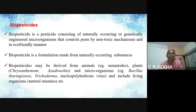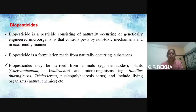What are biopesticides? A biopesticide is a pesticide consisting of naturally occurring or genetically engineered microorganisms that control pests by non-toxic mechanisms and in an eco-friendly manner. Biopesticide is a formulation made from naturally occurring substances. It is derived from animals — for example, nematodes — plants like chrysanthemum, and our focus is neem, and microorganisms like Bacillus thuringiensis, Trichoderma, nucleopolyhedrosis virus commonly known as NPV, and also living organisms which are the natural enemies.